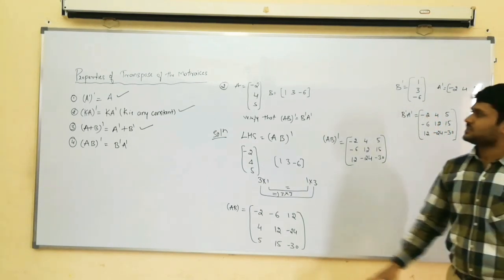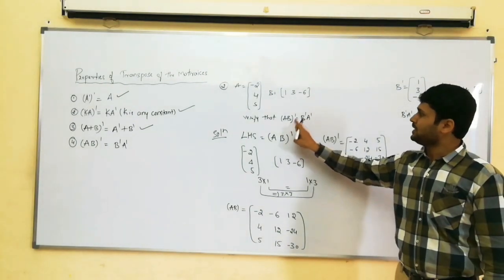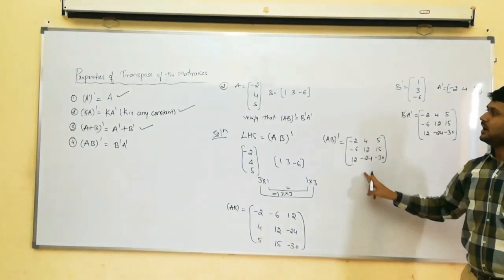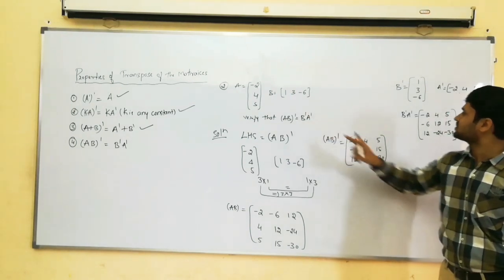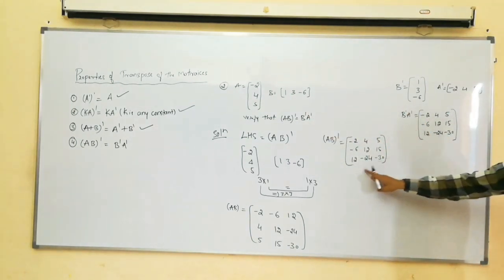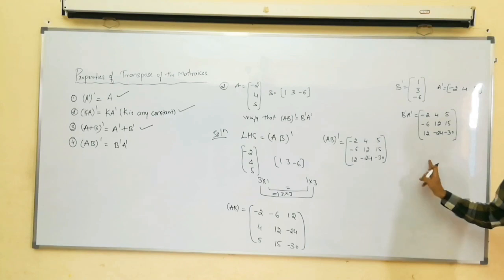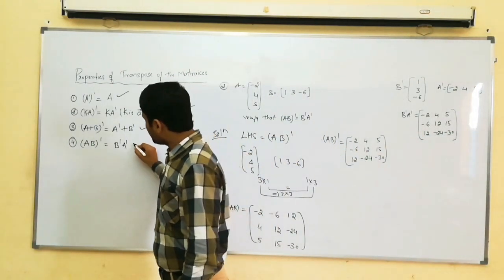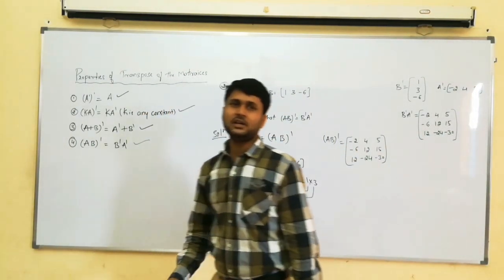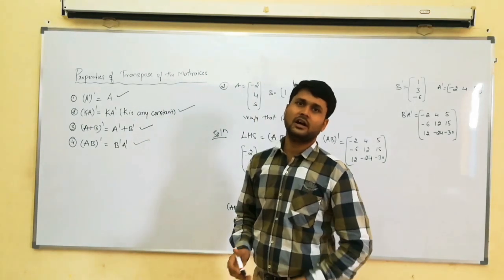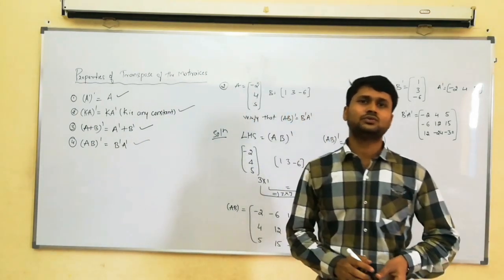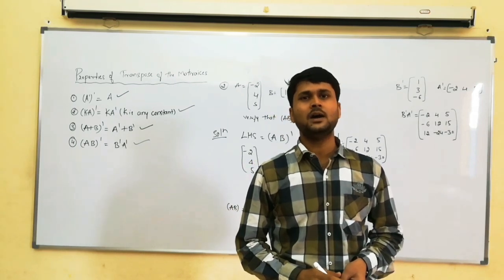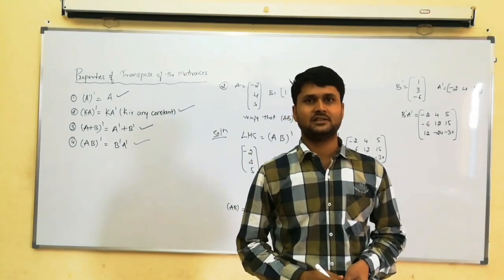Checking LHS and RHS: A into B dash answer and B dash into A dash answer — both are correct. This confirms that our fourth property is also verified. In this way we solve examples based on the properties of transpose of matrices. Thank you.